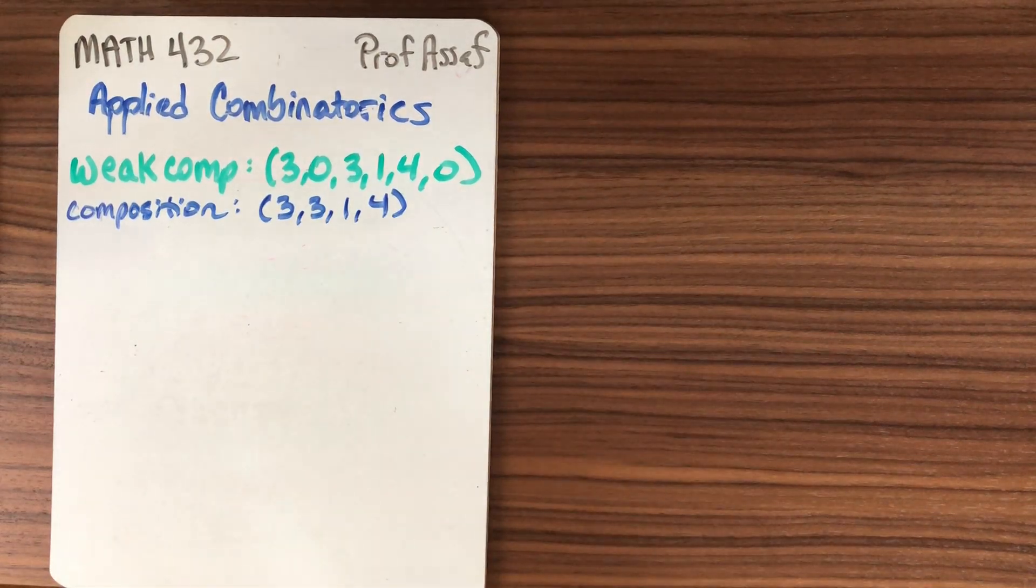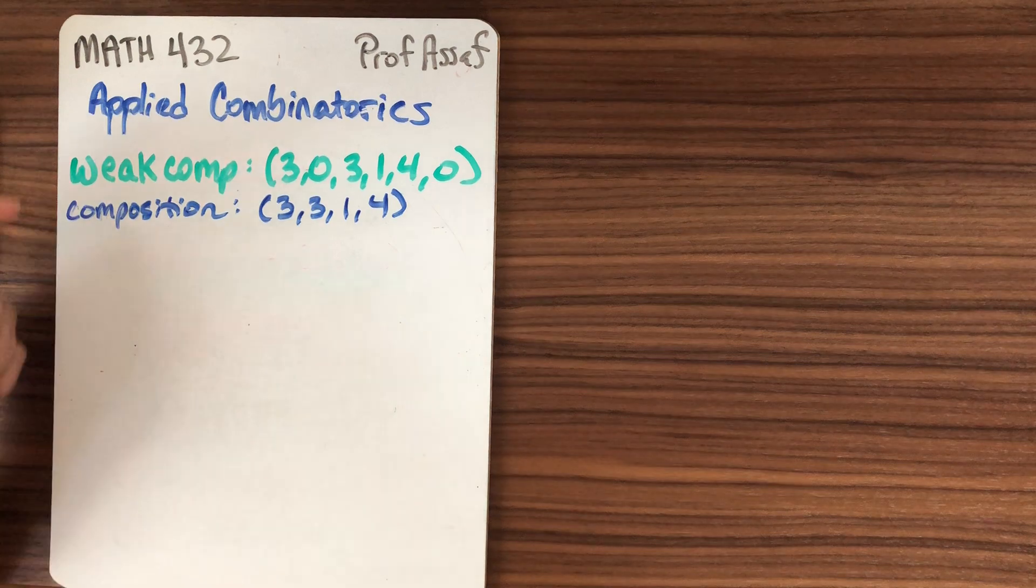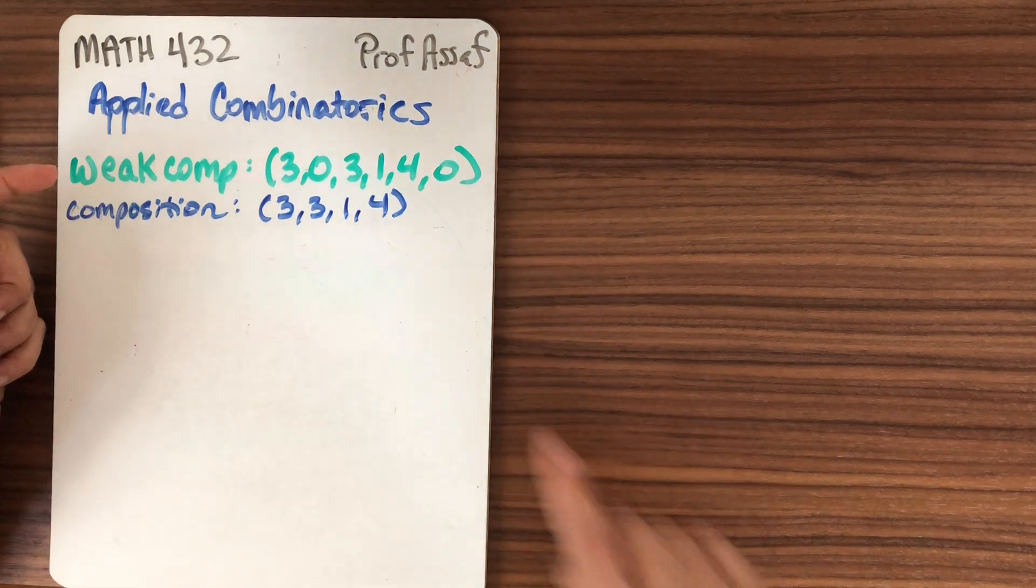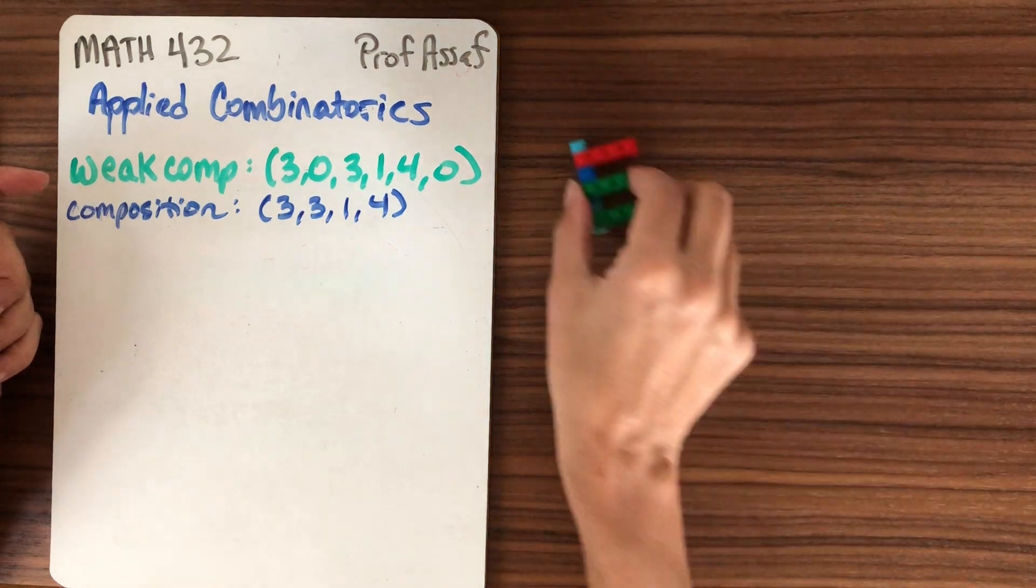This is Math 432, Applied Combinatorics. I am Professor Asaph. Last time we talked about weak compositions. Here's an example of a weak composition. It's a non-negative string of numbers.